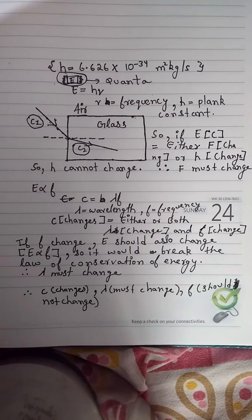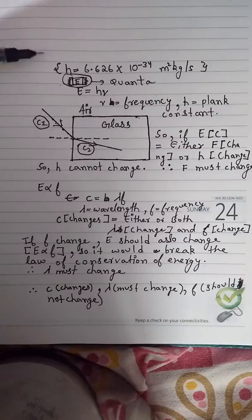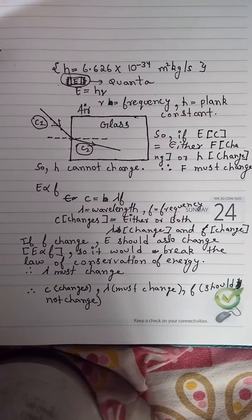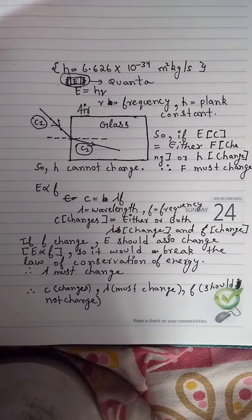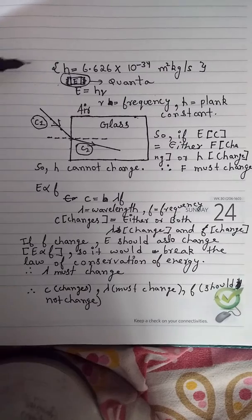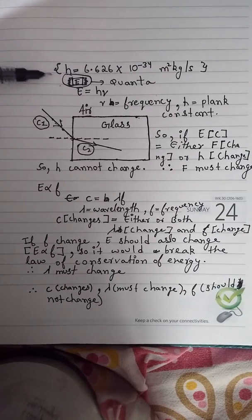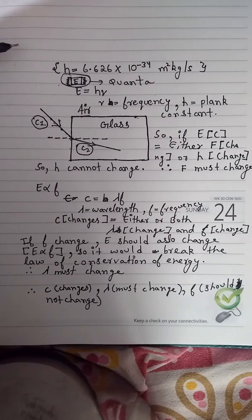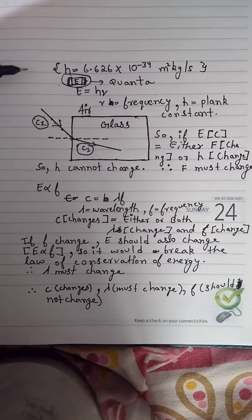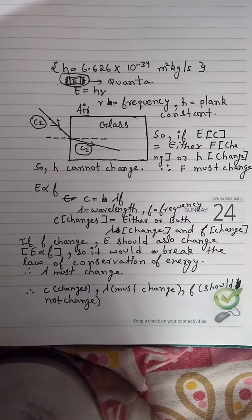First we will look at the Planck constant which is given here. It was discovered by the scientist Max Planck. He has given the theory that energy travels only in small discrete packets called quanta. This is quanta and the energy carried by it can be determined by E equals h nu, where nu is equal to frequency and h is equal to Planck constant.